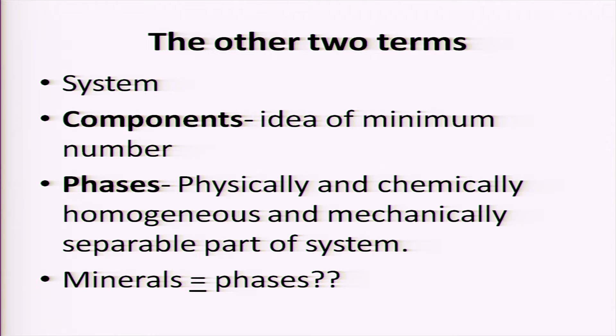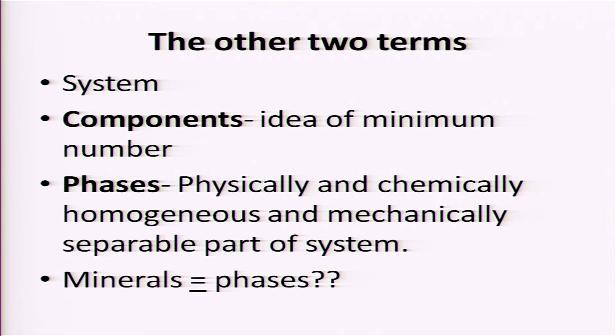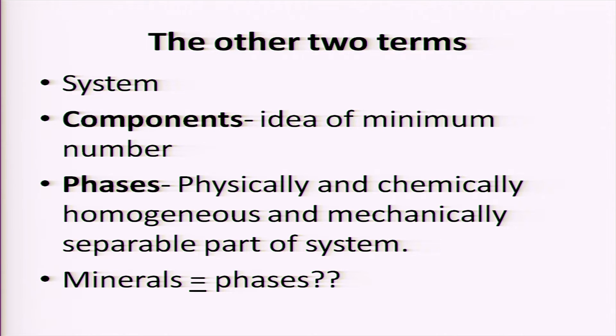In defining a system, there are two important terms we will be using. One is called components. In a chemical system, the components are chemical entities — they can be elements, oxides, or compounds. The important thing is that there is a minimum number attached to components: the minimum number which defines the system. The system may not be uniform and may be made up of many phases. Phase is the other term we need to learn: phase is any part of a system which is physically and chemically homogeneous and is mechanically separable. So the components are those chemical entities which are minimum to define all the phases of the system.